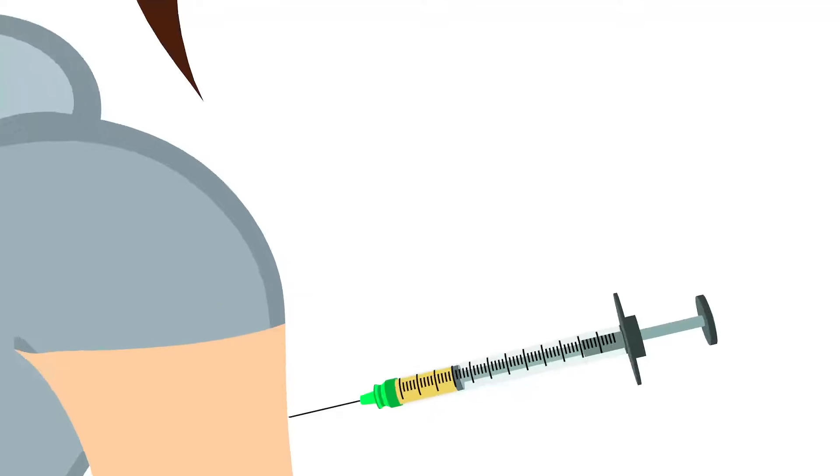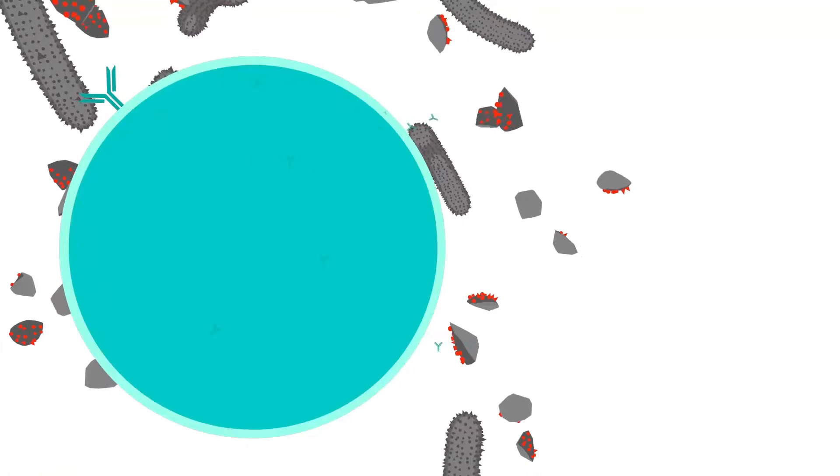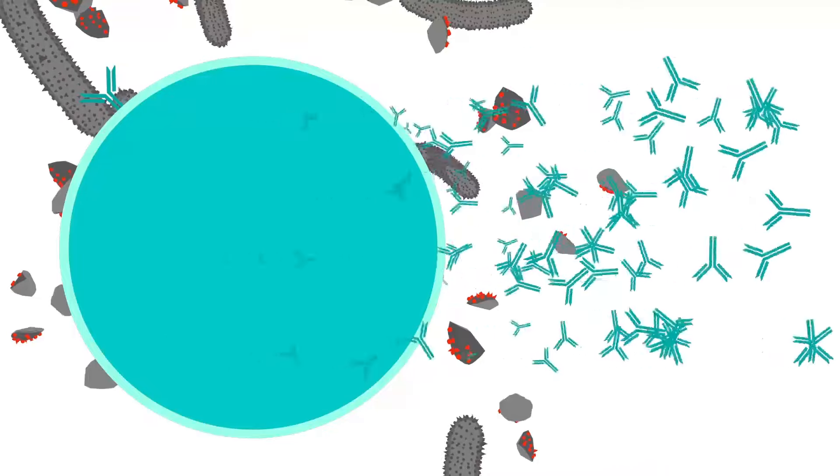Vaccines work in the same way. They contain weakened or dead bacteria or viruses, or even just a few proteins or sugars from the surface. This is enough to convince the immune system that a real invader has got in. The same process takes place as when real bacteria or viruses invade our bodies, except you don't get ill.